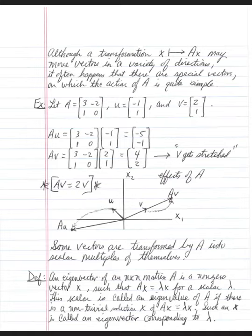Although a transformation x to ax may move vectors in a variety of directions, it often happens that there are special vectors on which the action of A is quite simple. For example, let's let A be a 2 by 2 matrix. U and V be their respective column vectors. Multiplying A times U, you have 3 times negative 1 plus negative 2 times 1. That gives you negative 5, negative 1.